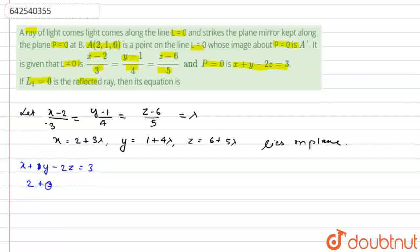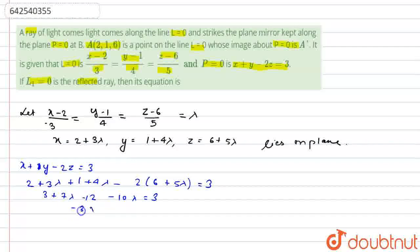It will give 2 plus 3 lambda plus 1 plus 4 lambda minus 2 times 6 plus 5 lambda equals 3. After calculating, it will give 3 plus 7 lambda minus 12 minus 10 lambda equals 3, or minus 3 lambda equals 12. The value of lambda will come as minus 4.